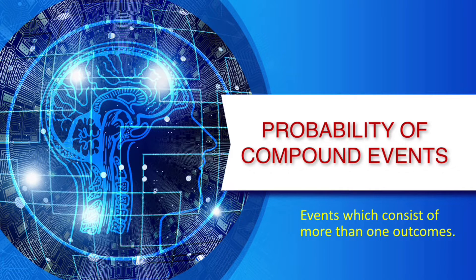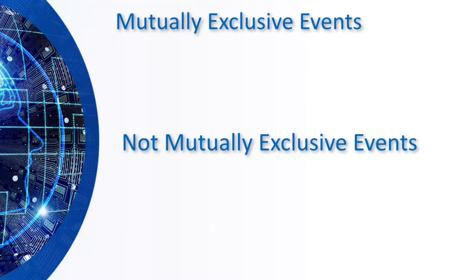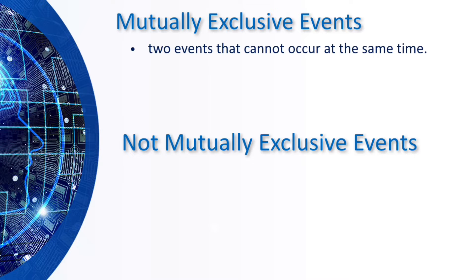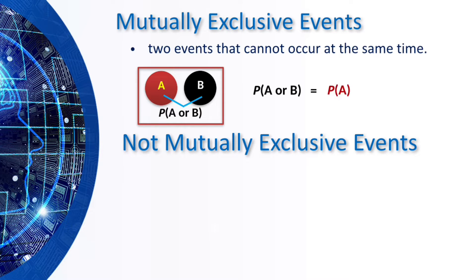These are events which consist of more than one outcome. First, let's talk about mutually exclusive events. These are two events that cannot happen at the same time. Look at the figure. The formula is P of A or B, that is equal to the probability of A plus the probability of B.